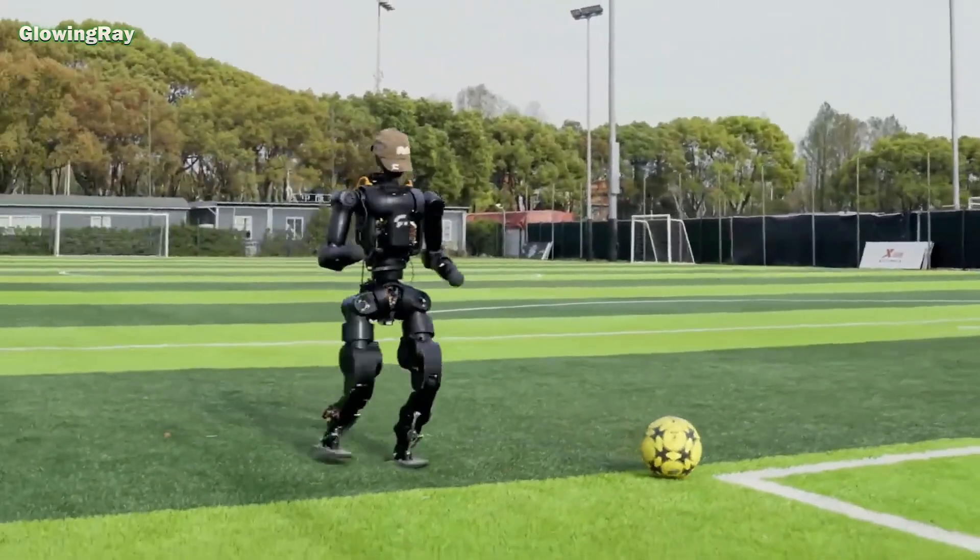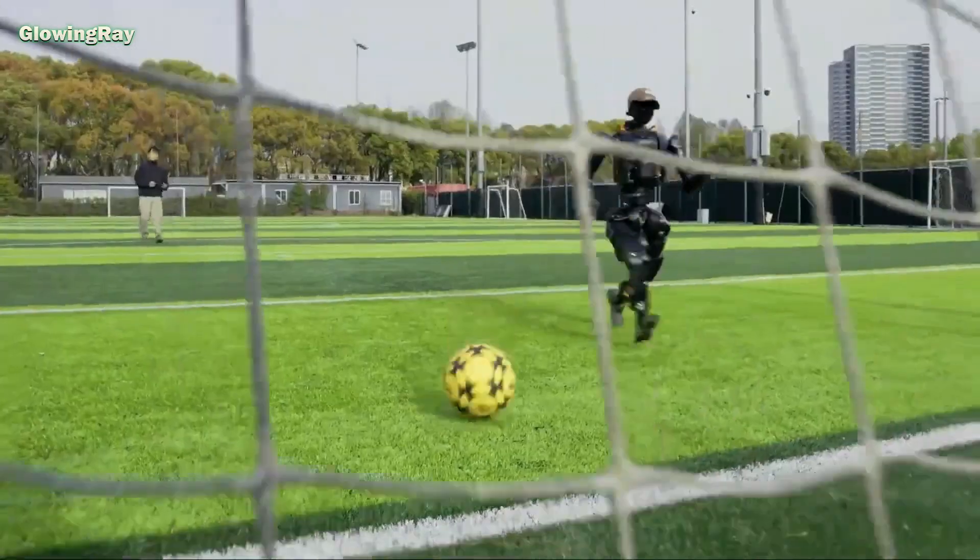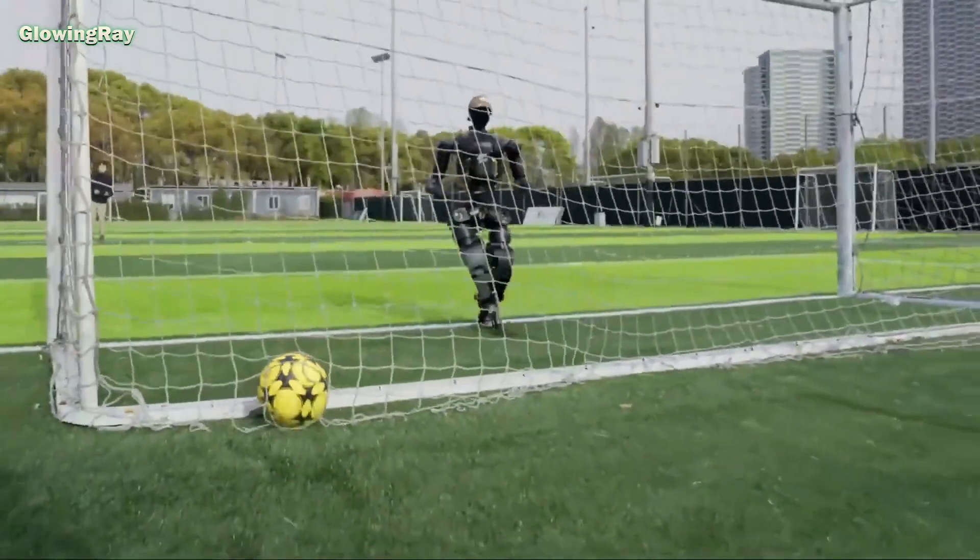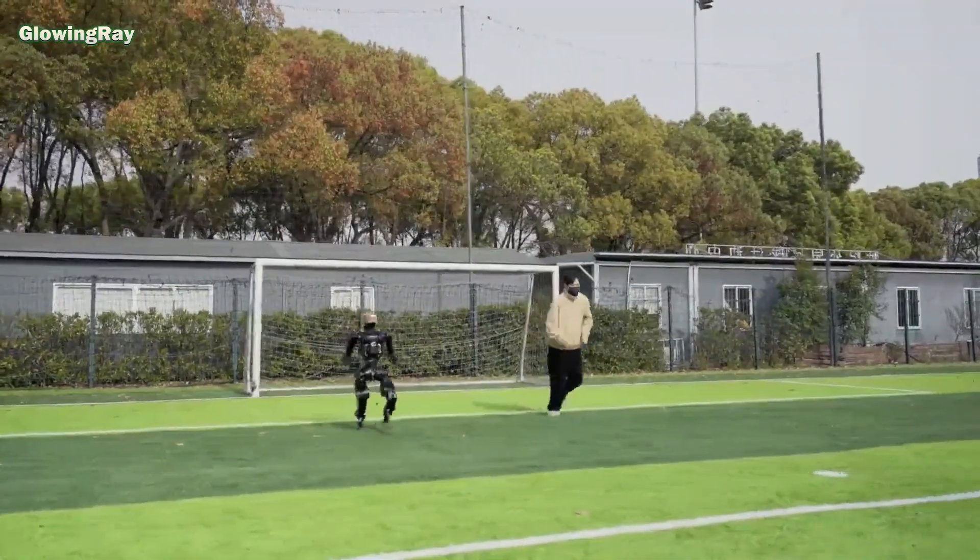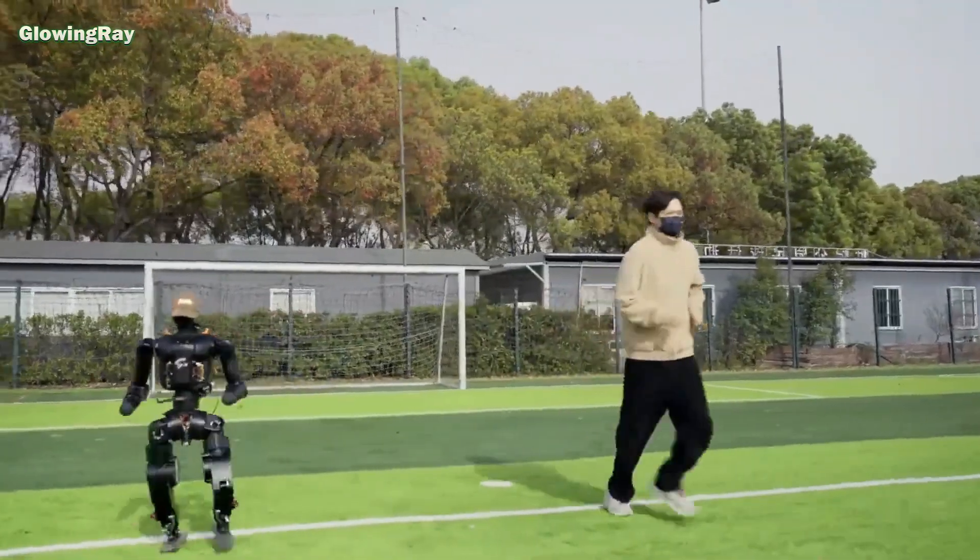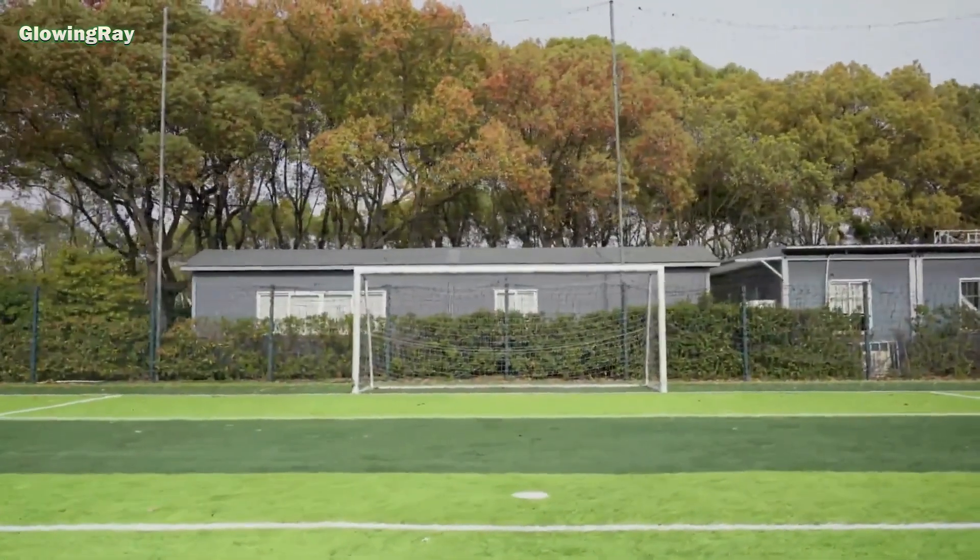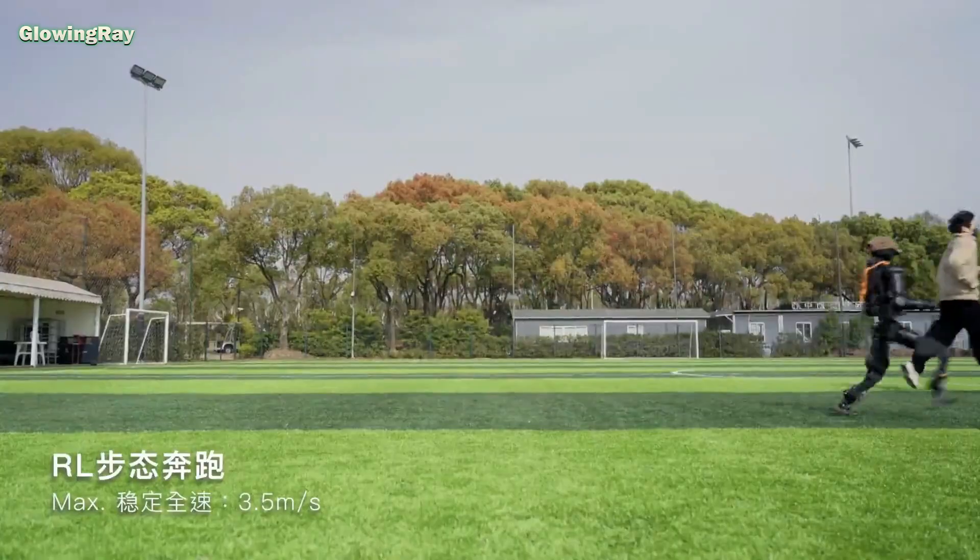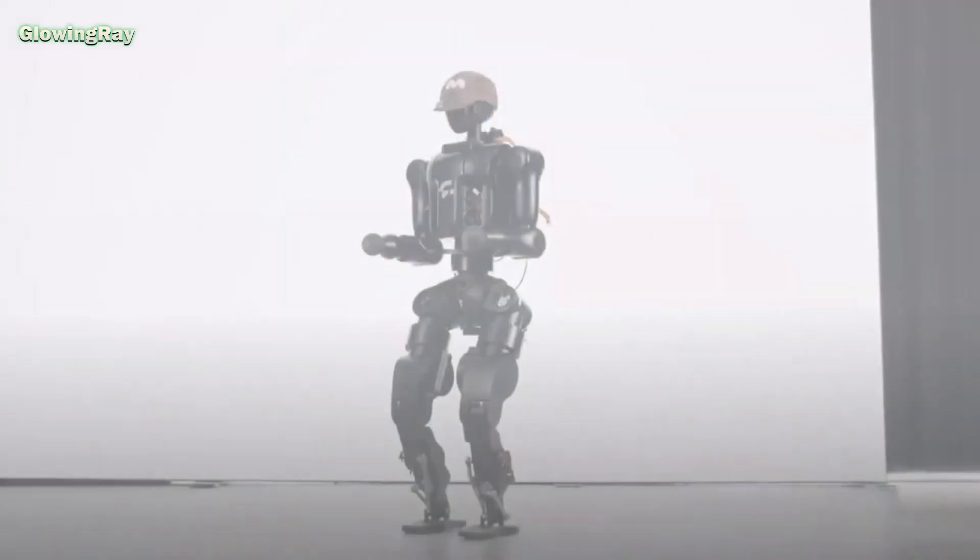Standing at 1.3 meters tall and weighing 38 kilograms, the N1 features 23 degrees of freedom for complex movements. Built with lightweight aluminum alloy and engineering plastics, it combines durability with flexibility.